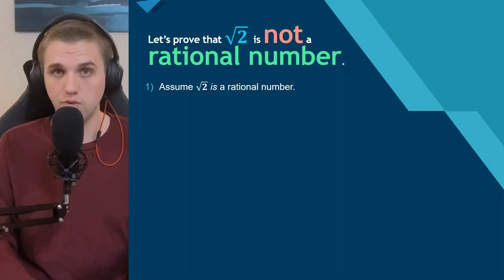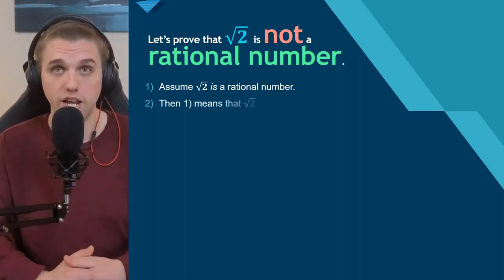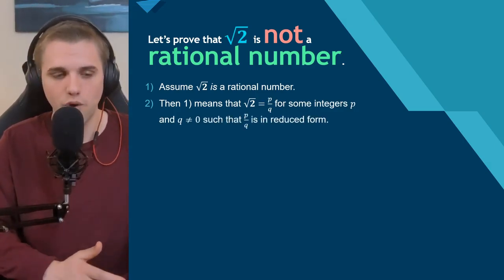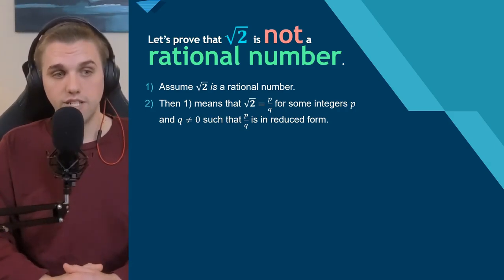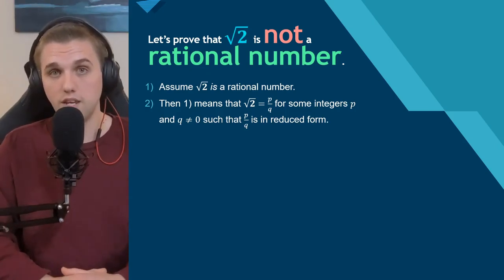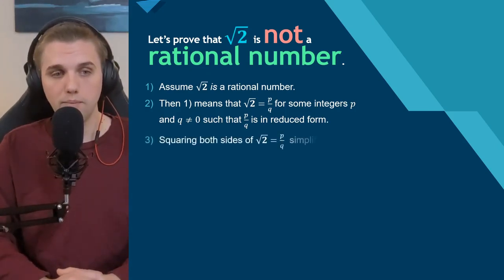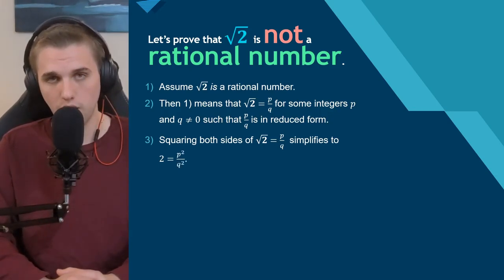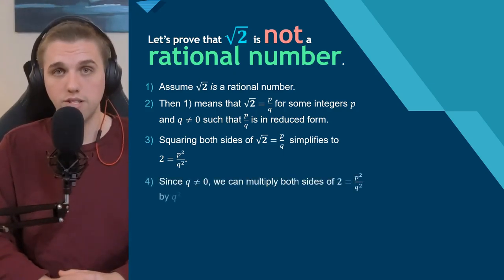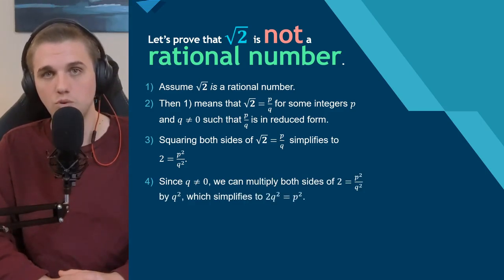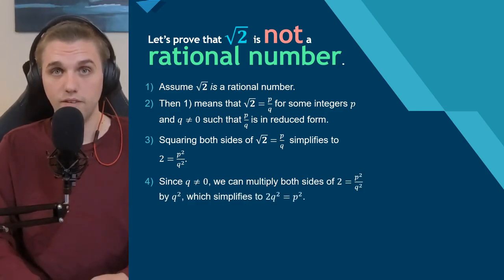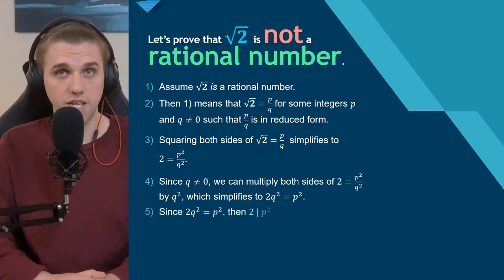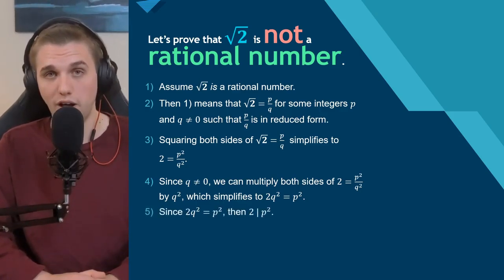What does it mean for √2 to be rational? It can be represented as a fraction p/q, reduced so the greatest common divisor is 1, with q non-zero and both p and q integers. Squaring both sides gives 2 = p²/q². Multiplying both sides by q² gives 2q² = p². Notice: since 2 times something equals p², that means 2 divides p².